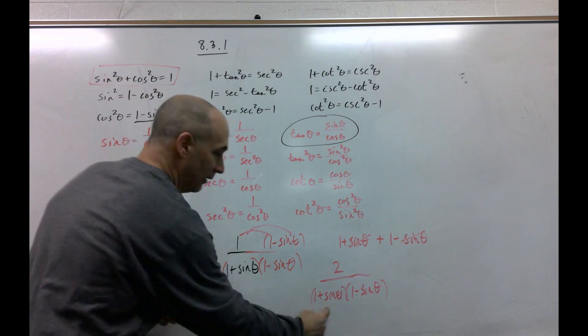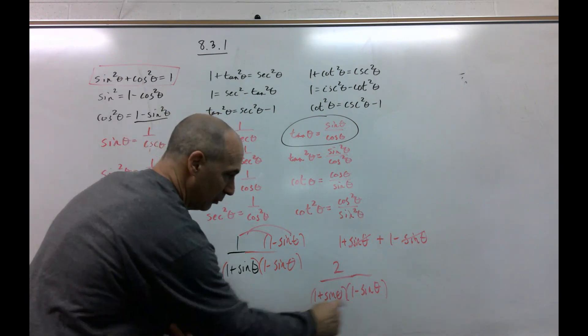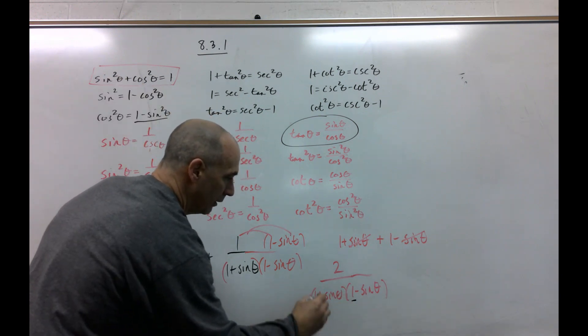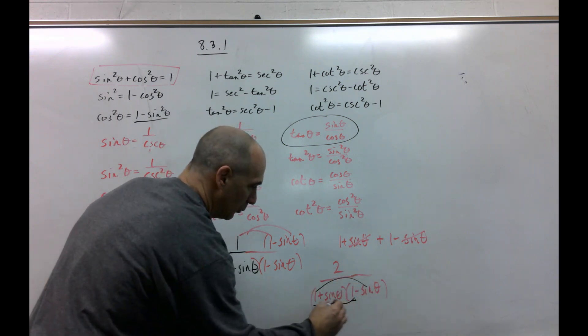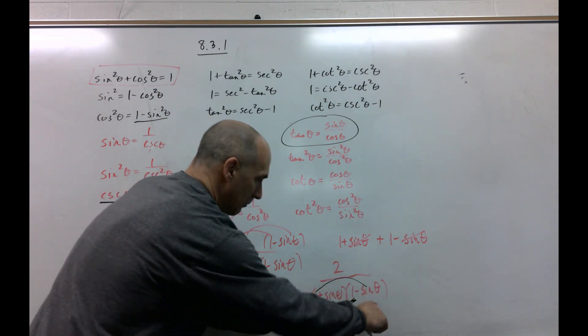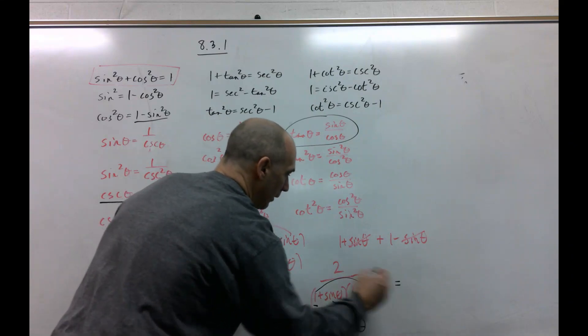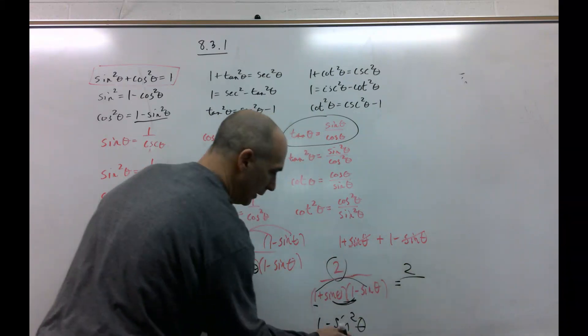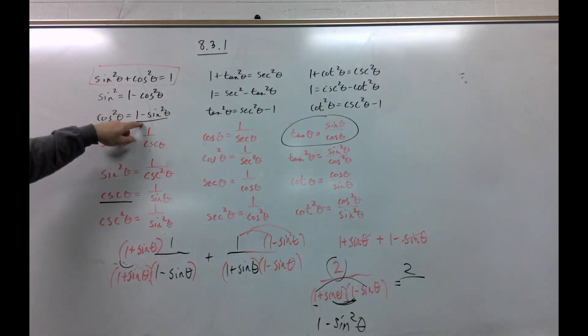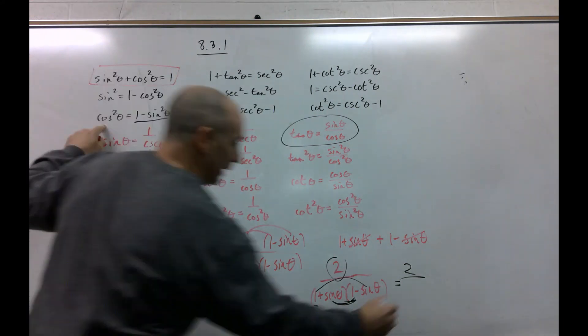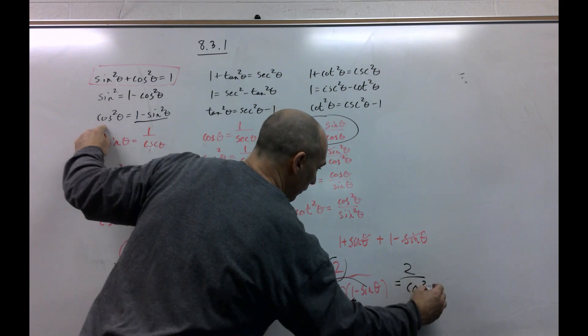I'm going to go ahead and foil this out. But notice we got one times one is one. The outside and the inside would cancel, and then we get minus sine squared theta.